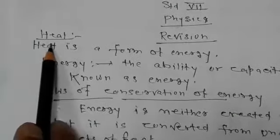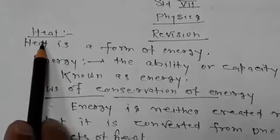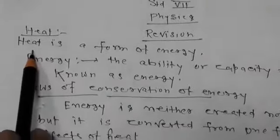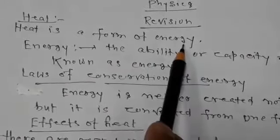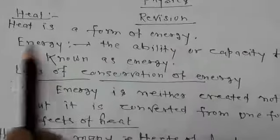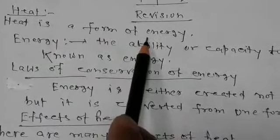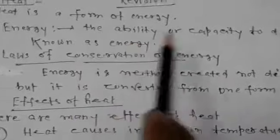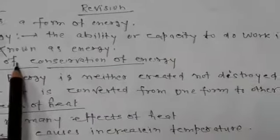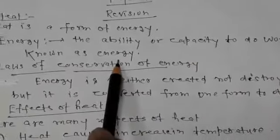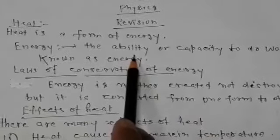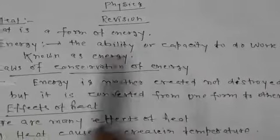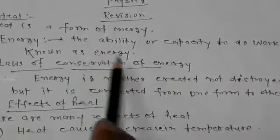First, Heat. What is Heat? Heat is a form of energy. The ability or capacity to do work is known as energy. If we have to work with any kind of ability, we call it energy.